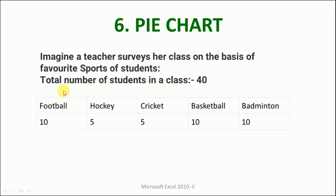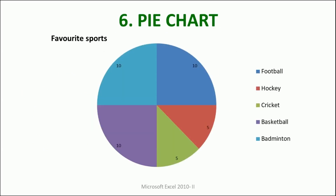We will understand this with an example. We have a class with 40 students, and the entire class is represented by those 40 students. If you look at the interest of these students in various sports: football has 10 students, hockey 5, cricket 5, basketball 10, and badminton. The whole class is comprising of these different sports students. When we put this data into a pie chart, it will look like this.